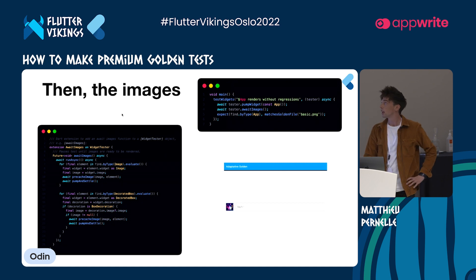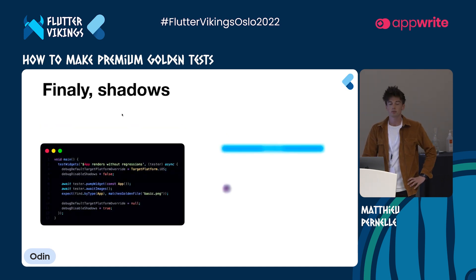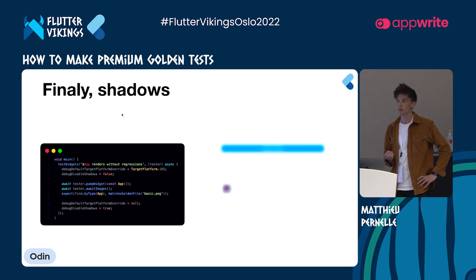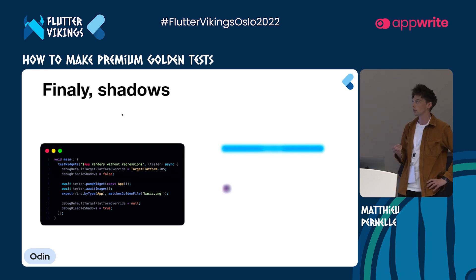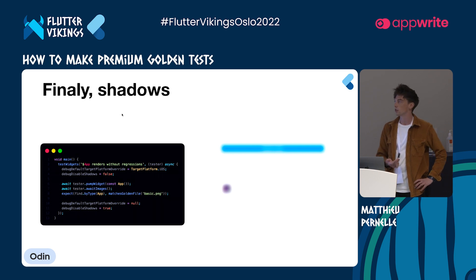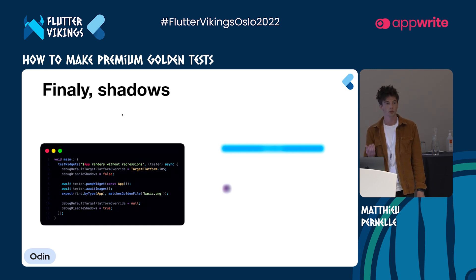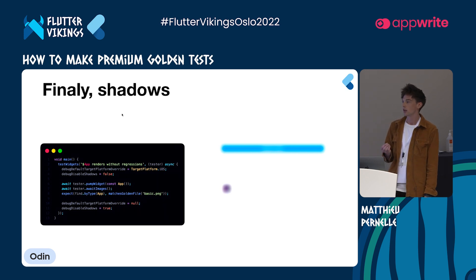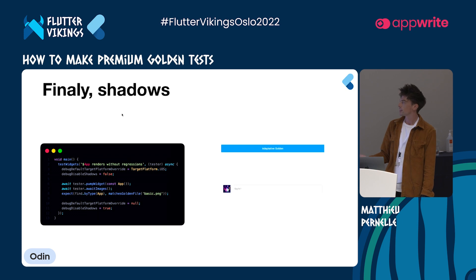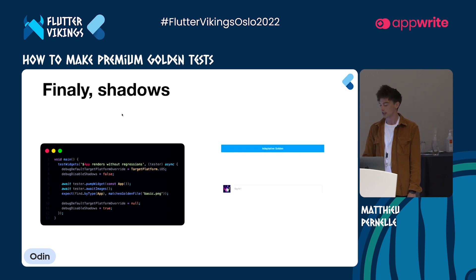The image loader will ensure that every image is displayed on the golden file before it's rendered — and here you can see it. Finally, by using debug values from Flutter painting and foundation, we can enable shadows and set a target platform like iOS. But make sure that you reset those values before the test ends, otherwise you will get an assertion error. Our test is now much better looking.